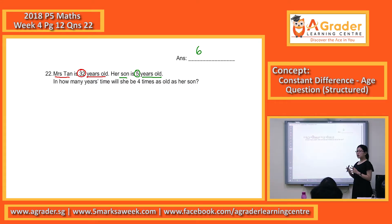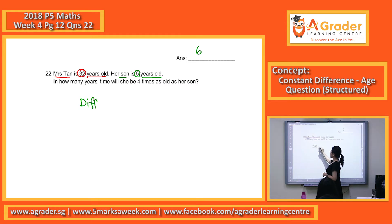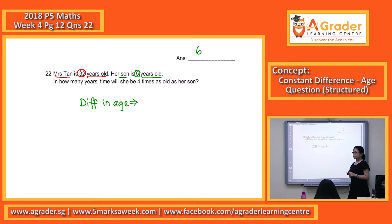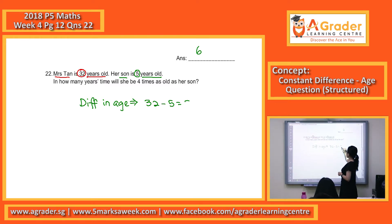The first thing to focus on is the difference in age. What is the difference in age? 32 minus 5 — so 32 minus 5, we get 27.